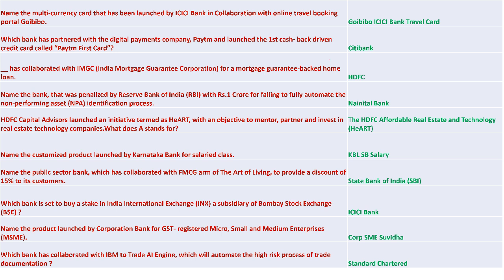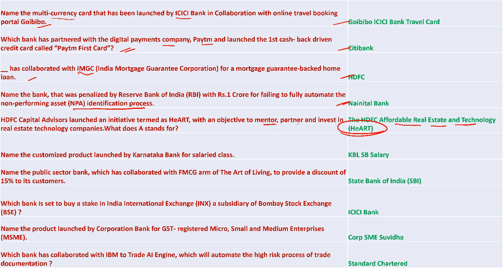GoIbibo ICICI Bank Travel Card is the multi-currency card launched by ICICI Bank in collaboration with online booking portal GoIbibo. Citibank partnered with digital payment company Paytm and launched the first cashback-driven credit card called Paytm First Card. HDFC collaborated with IMGC for a mortgage guarantee-backed home loan. Nainital Bank was penalized by RBI for failing to automate the NPA identification process. HDFC Affordable Real Estate Technology (HEART) was launched by HDFC Capital Advisors to mentor, partner, and invest in real estate technology companies.